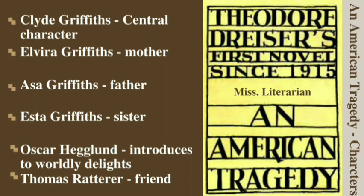Elvira Griffiths is Clyde's mother. She is an evangelist who tries to save her son from the electric chair when he was dying. Asa Griffiths is Clyde's father and a poor evangelist. Esther Griffiths is the older sister of Clyde who ran away with an actor and is left deserted and pregnant.